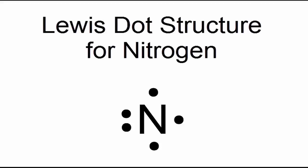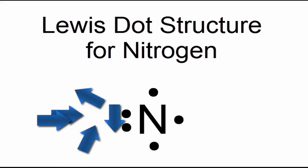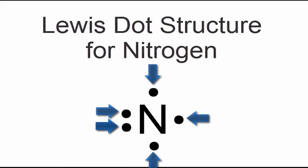For nitrogen, we have five valence electrons, so we can put the N in the center to represent the nitrogen, with five dots around it. Those represent the valence electrons.